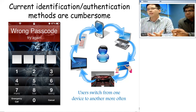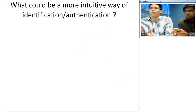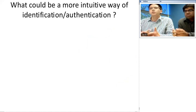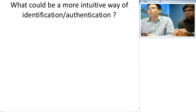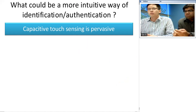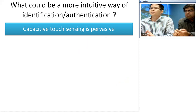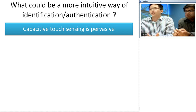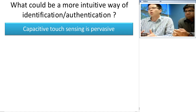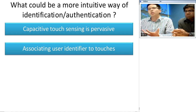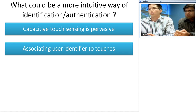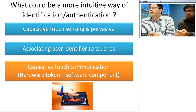As researchers, we were looking at what could be a more intuitive way of identification and authentication. We were motivated by the fact that capacitive touch sensing is becoming more and more pervasive — in mobile devices, ATM machines, home appliances like TVs, even microwaves. Those devices also tend to be used by multiple users simultaneously, like in a multi-user gaming scenario where many people share the same tablet. We wanted to associate a user's identifier with the touch they make on the screen.